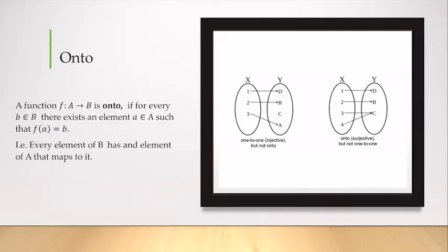A function from a to b is onto if for every element in our target, an element a maps to it. So, for example, here we have this graph. It's one-to-one because each x has exactly one y value, but it's not onto because c has nothing that maps to it. Sad day.